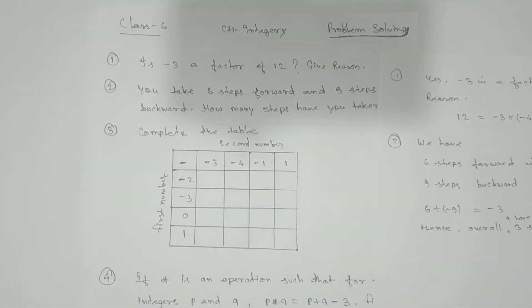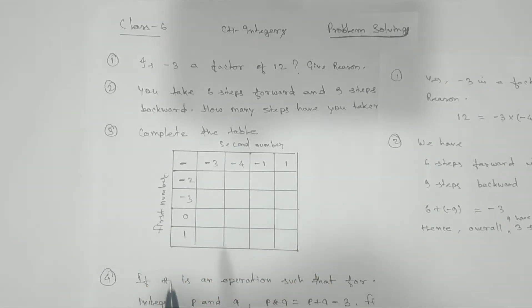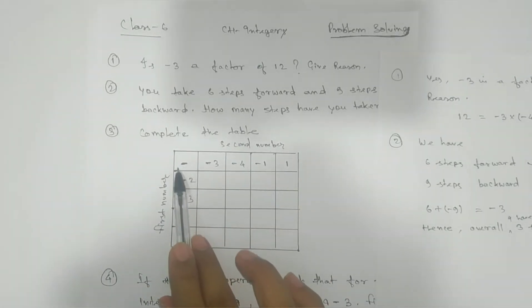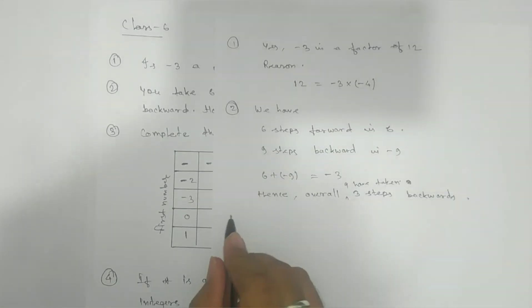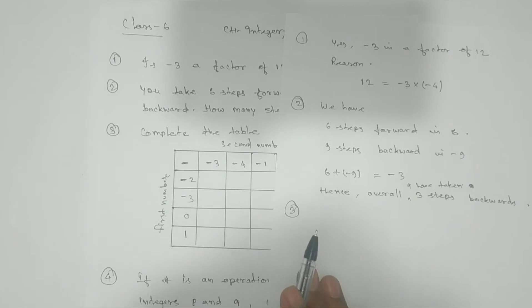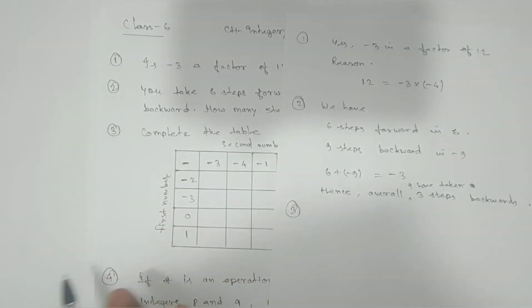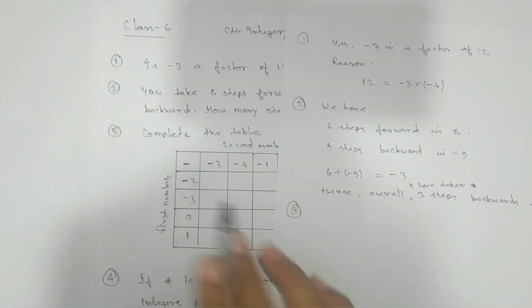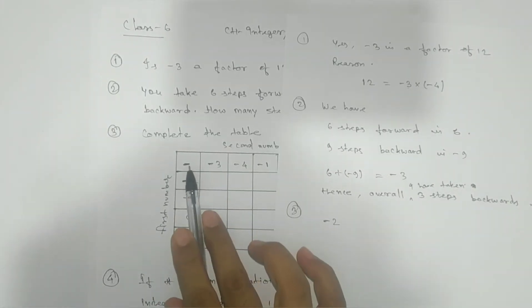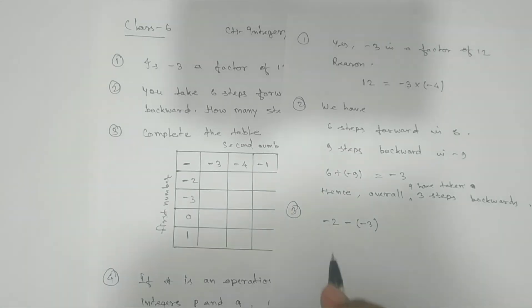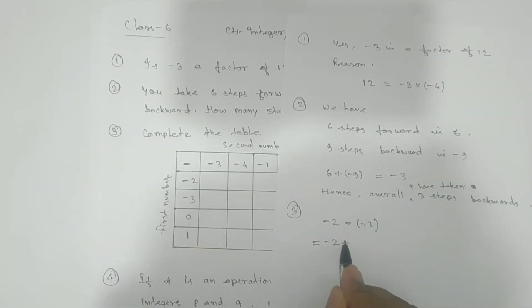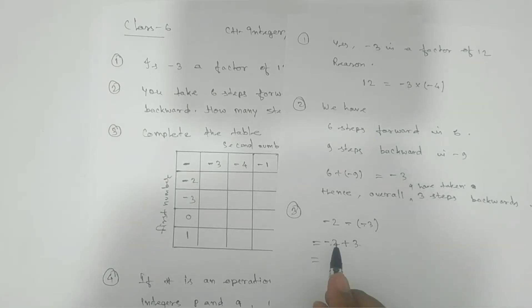Next problem: complete the table. They have mentioned a first number and a second number, and the symbol is minus. Let's see how to solve this. The first number is minus 2, the symbol is minus, and the second number is minus 3. Minus 2 minus minus gives you plus 3. Both have different symbols so we do subtraction: 3 minus 2 is 1.